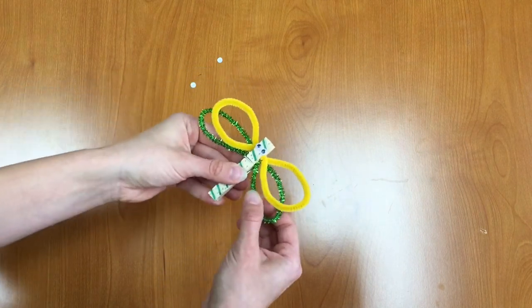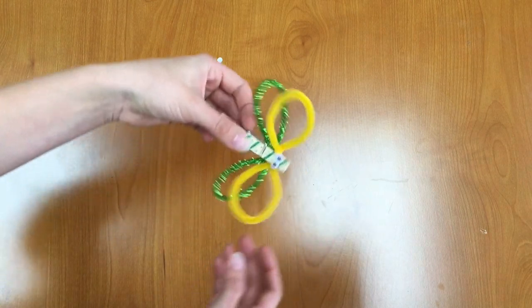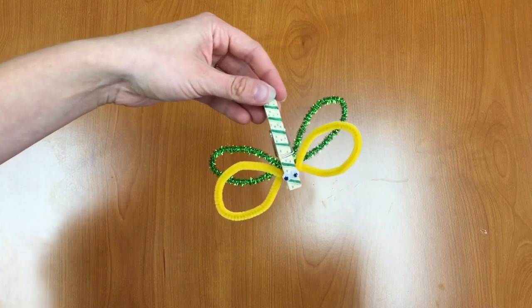You can kind of adjust the wings a little bit to aim them backwards. But now you have your dragonfly clothespin. Great job everyone.